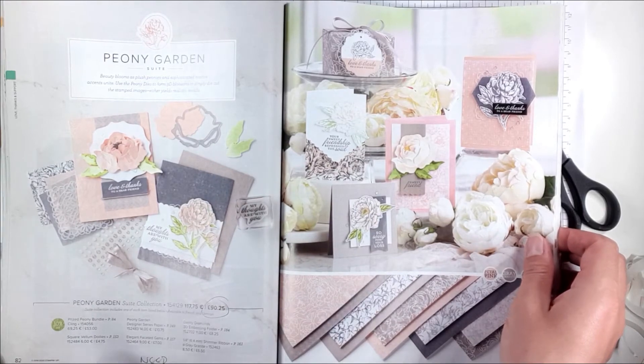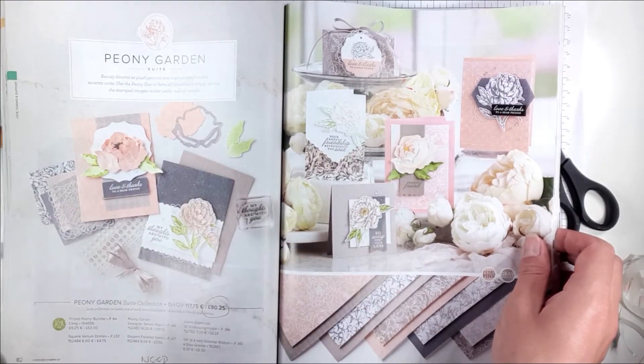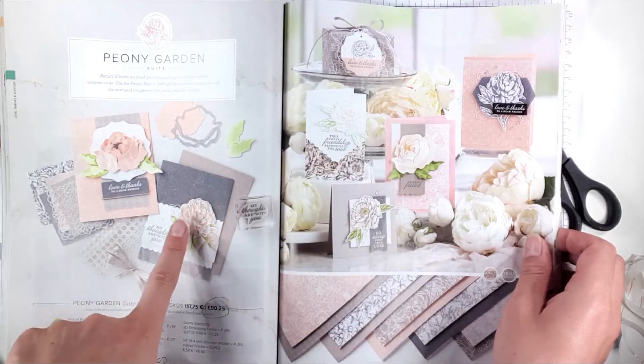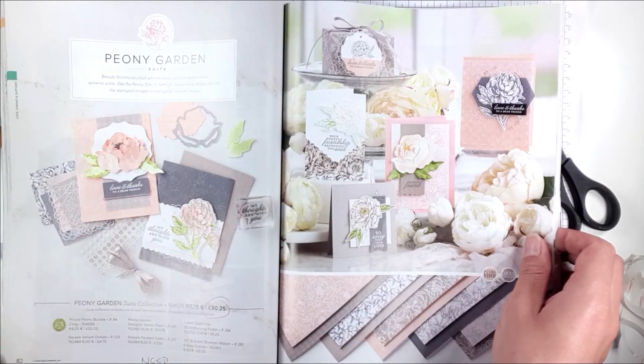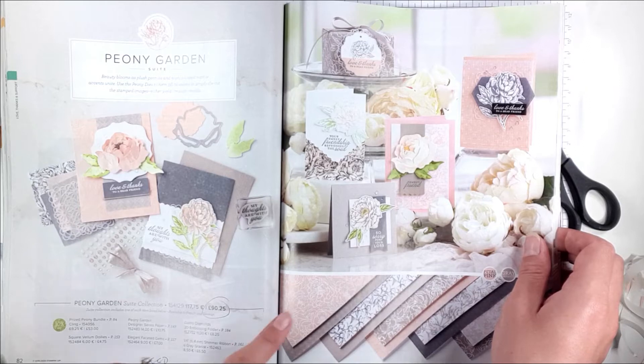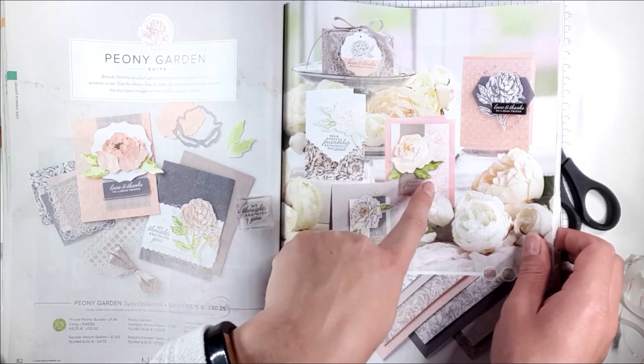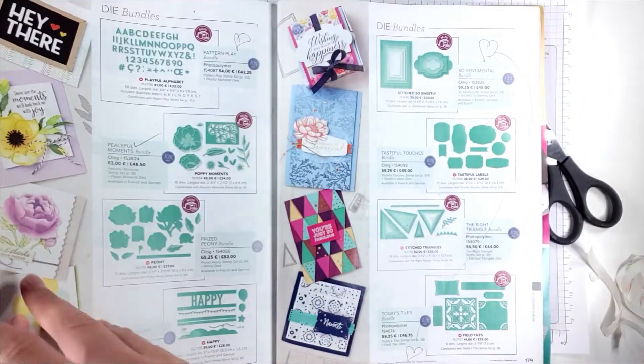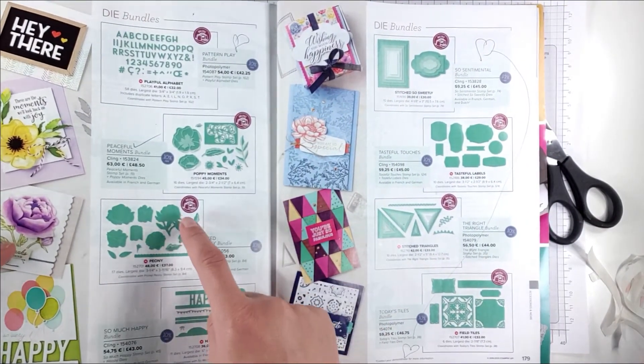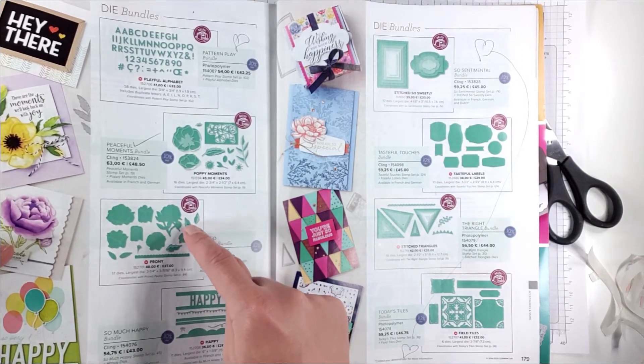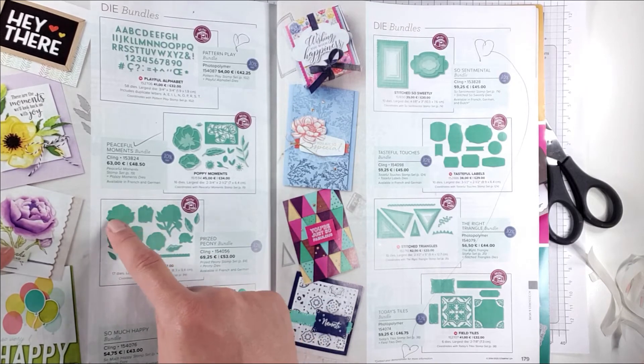There are actually some dies that go with this stamp set. This is the Peony Garden Suite in the catalogue and you can see there are some really gorgeous samples. The dies that come with it cut around the flowers and they also create these layered flowers here. These are the ones that cut out the flowers here and there's some layered leaves. These bits create the layered flowers and then there's a scalloped edge as well.